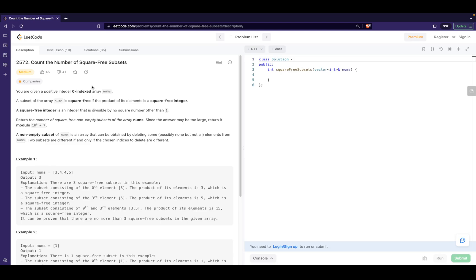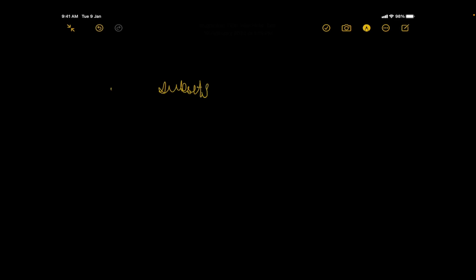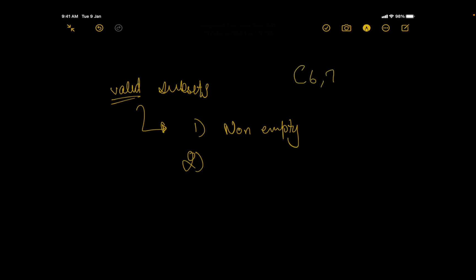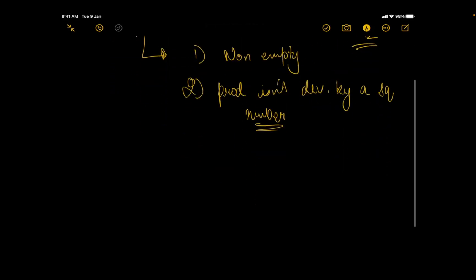I'll discuss what the problem wants without going through the full description. We need to find valid subsets. A valid subset must be non-empty, and the product of its elements must not be divisible by any square number. For example, if we have 6 and 7, their product is 42, and that product should not be divisible by any perfect square.